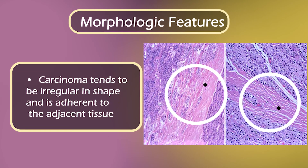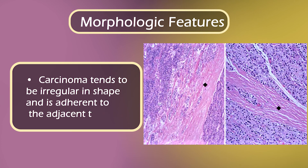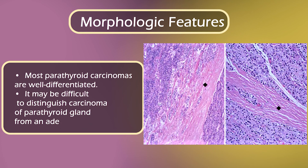Morphologic features. Carcinoma tends to be irregular in shape and is adherent to the adjacent tissues. Most parathyroid carcinomas are well differentiated.